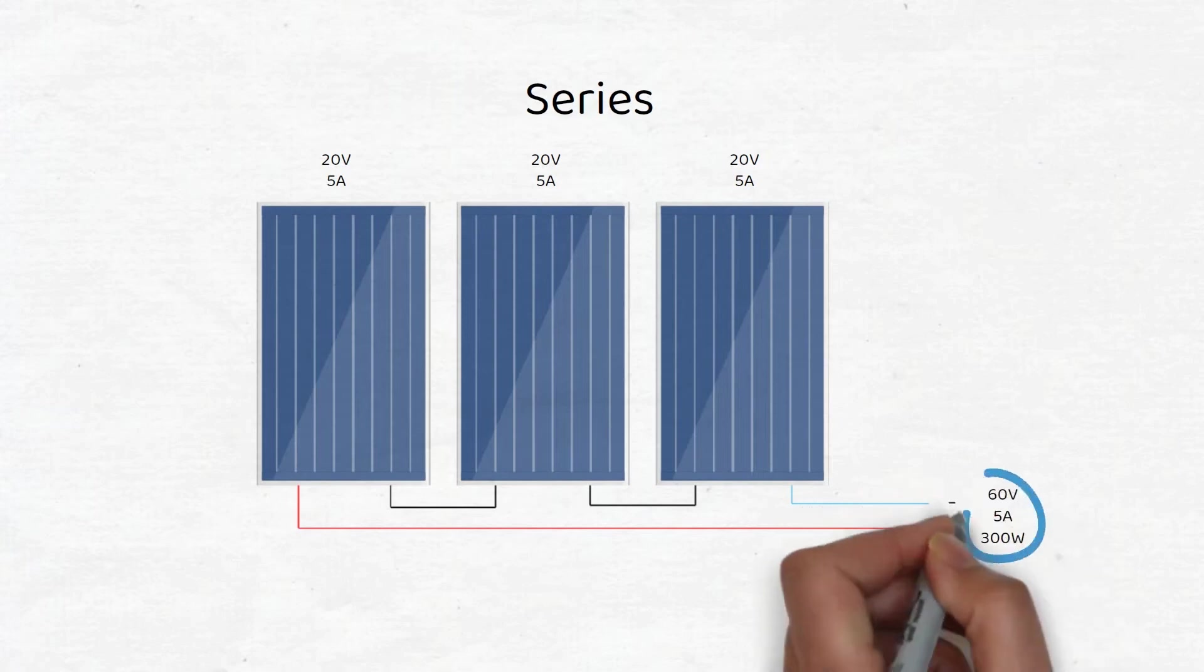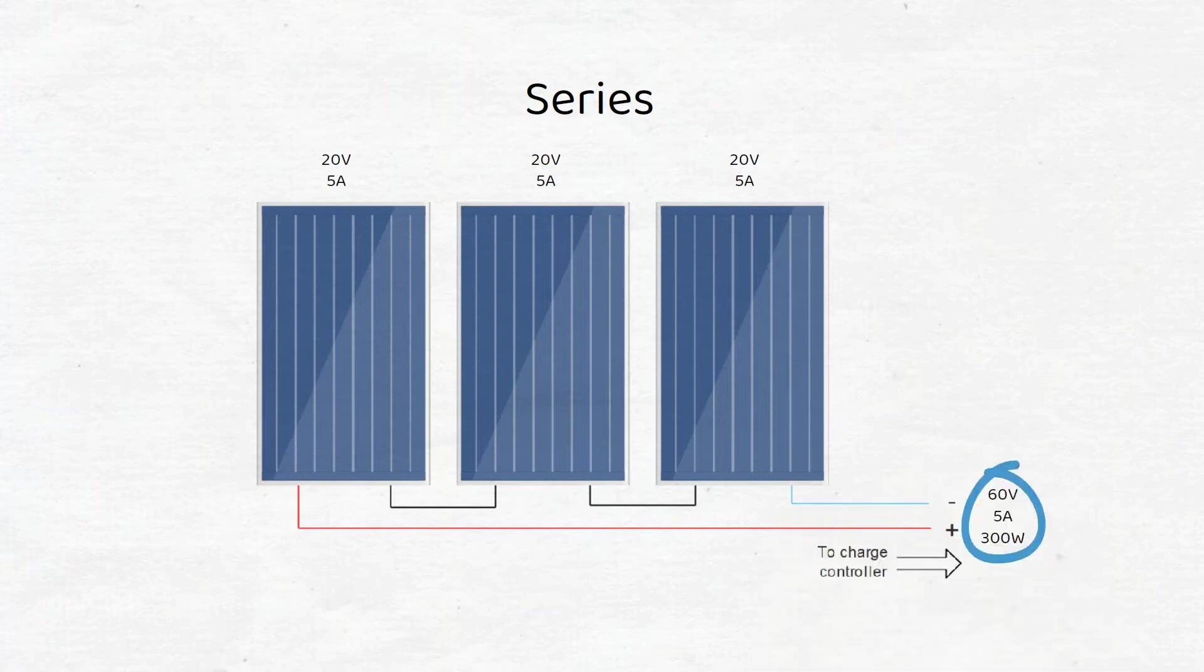Make sure the voltage is under the maximum allowed input voltage of your charge controller. This is usually 100 volts for an MPPT charge controller.